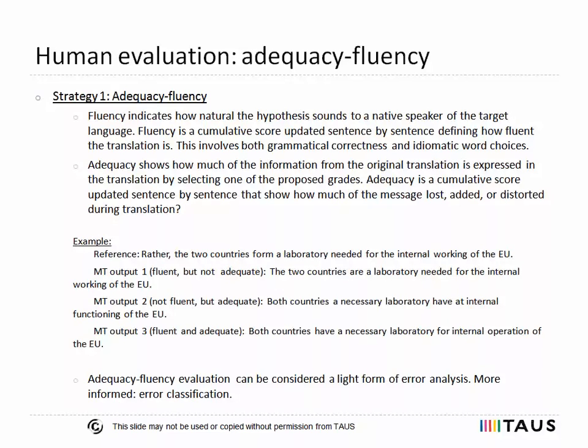There are four popular strategies of human evaluation that I am going to present in this module. The first one is based on adequacy and fluency estimation. Adequacy and fluency are widespread means of manual evaluation.